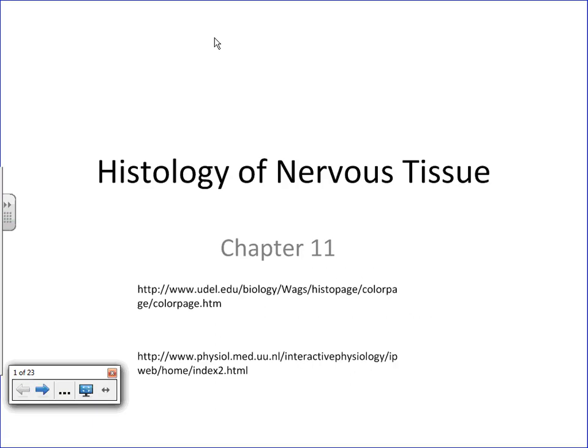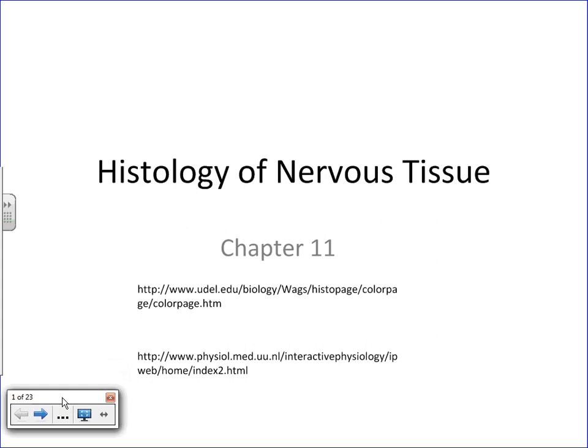In this video, I'd like to spend some time talking about the histology of nervous tissue. I'm going to break down the different types of cells found within the nervous system, and I also want to talk briefly about myelin because it is important to understand. So we'll talk about the cellular composition of the nervous system.